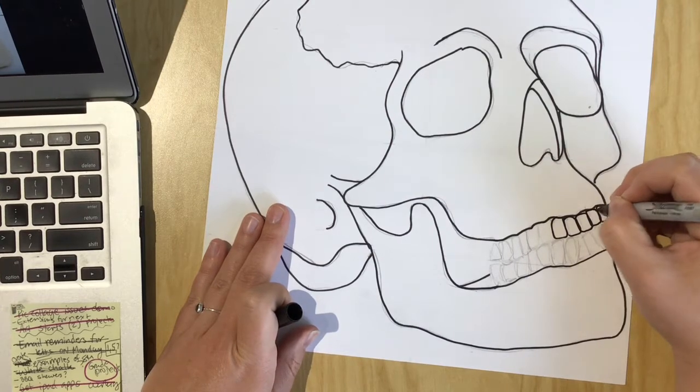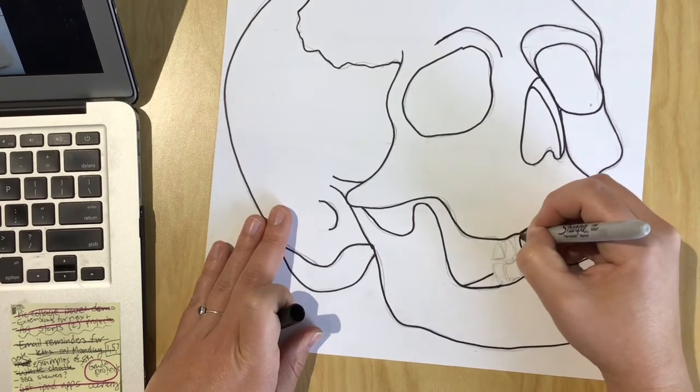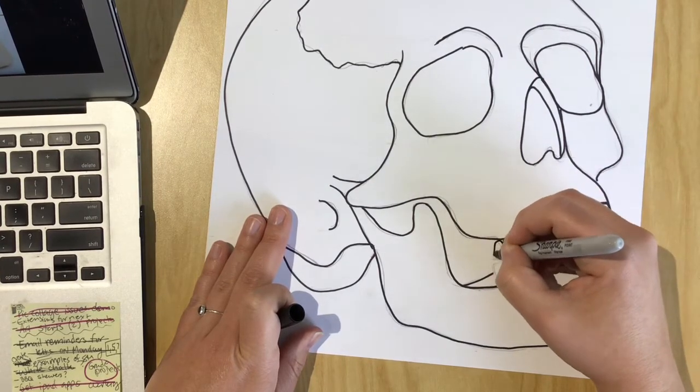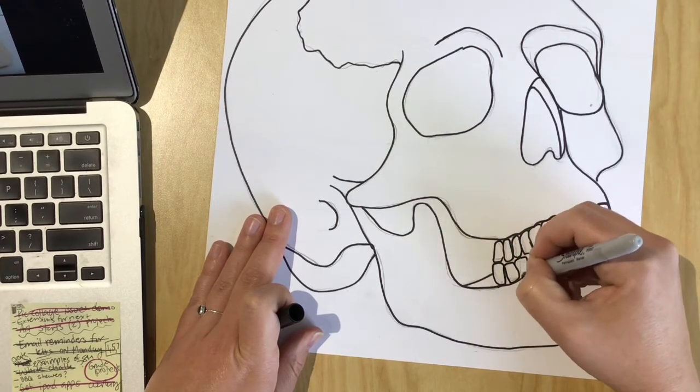After you're done tracing with Sharpie, and again, you can trace with the ultra fine Sharpie if you prefer, then I'm going to go back with my eraser and erase all the extra pencil lines showing up and that's just part of good craftsmanship.